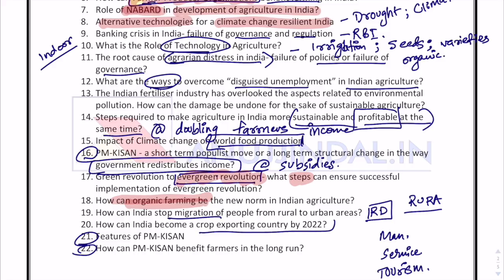How can India become a crop-exporting country by 2022? This is related to the WTO issue India faces, because the majority of our production is still being utilized for domestic use. We are not able to export a large amount of our agricultural products because the productivity of agriculture is very low. We have a large land base dependent on agriculture, but productivity is low and the quality of production is not aligned with international requirements, affecting exports. So what steps are required to become a crop-exporting country?